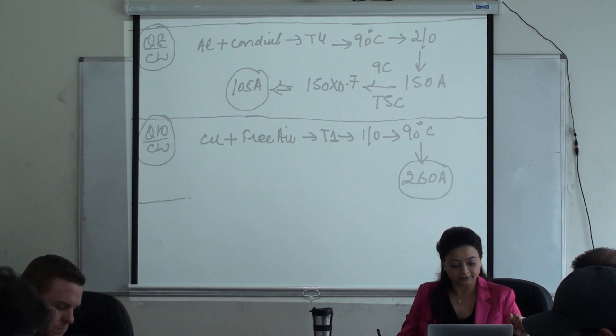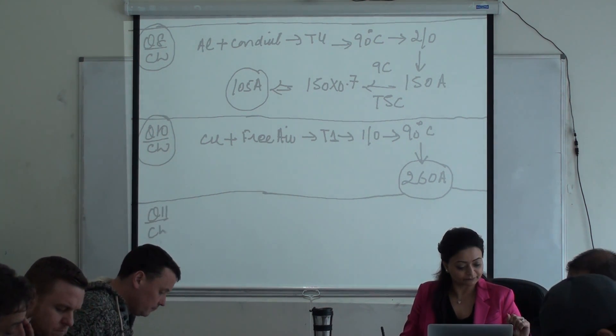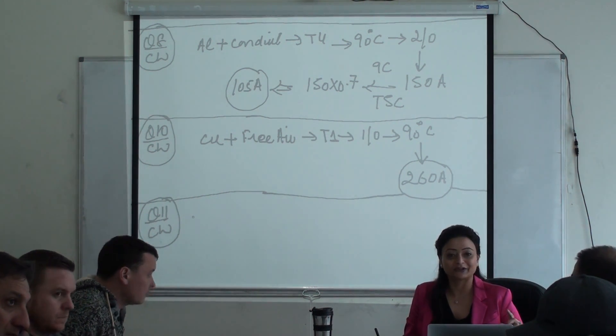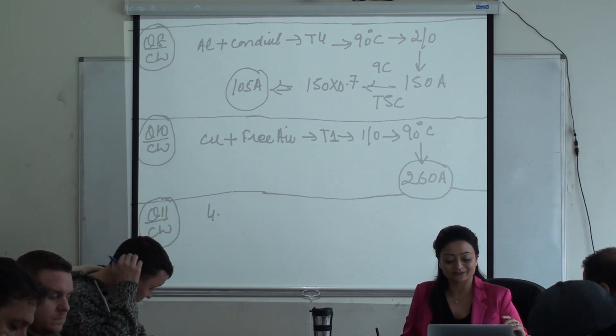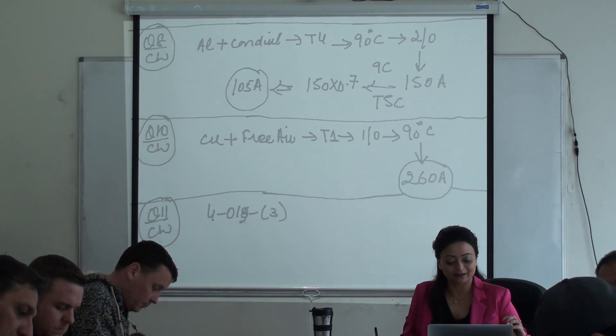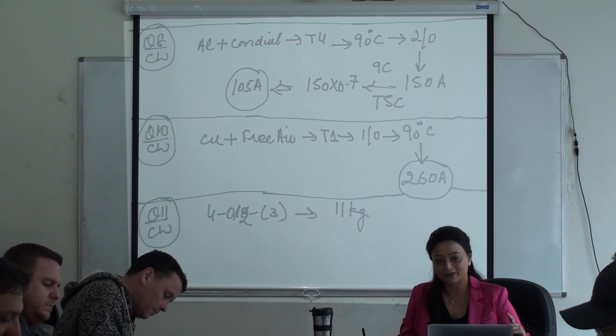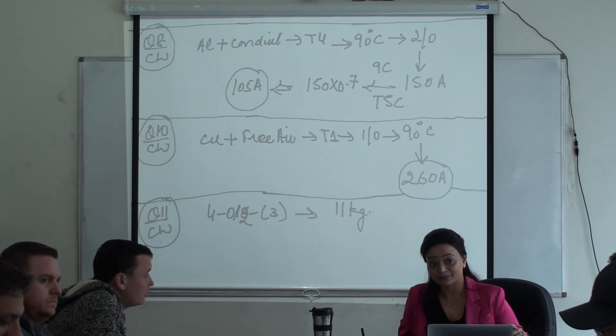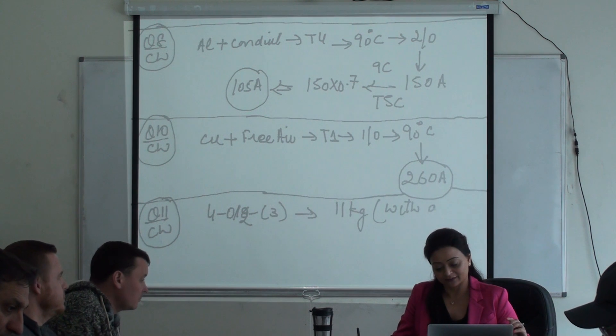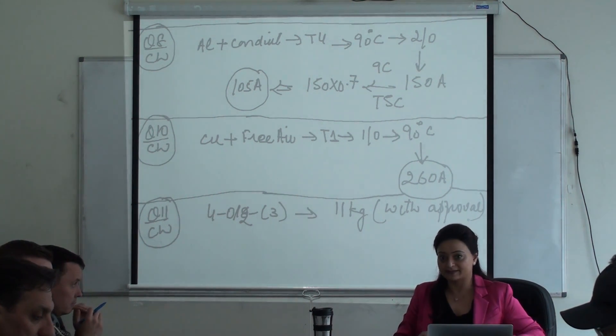Next one, question number 11. Read that question for me please. How much weight can be suspended from a flexible cord? I wanted to trick you guys to see if you can find the answer. What rule did you go to? Four dash zero twelve, sub rule three. That tells me how much weight? With special approval is 11 kilograms, and without special approval is 2.3. This is with the approval? Yes. Fantastic job. I have not taught you but I wanted you guys to look and see if you can find out.